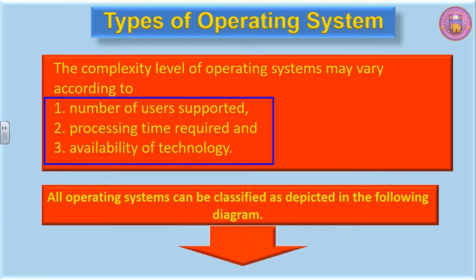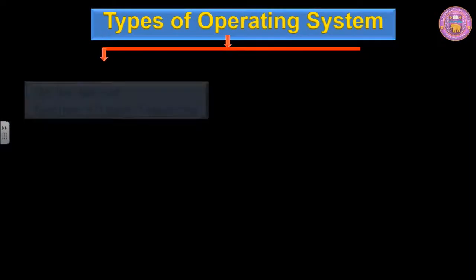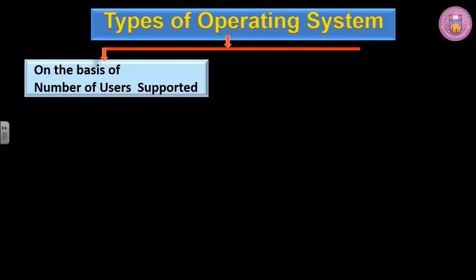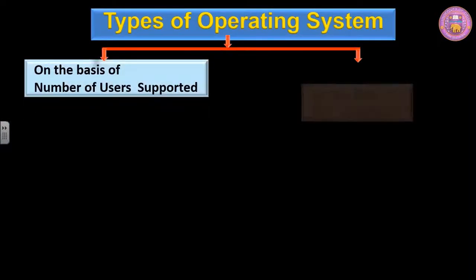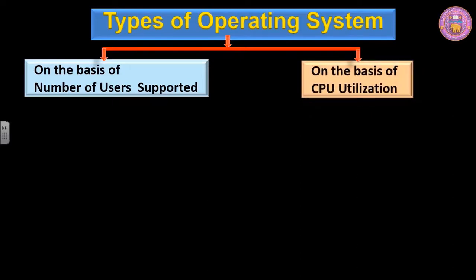All operating systems can be classified as depicted in the following diagram, on the basis of number of users supported and on the basis of CPU utilization.